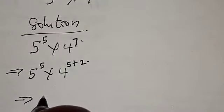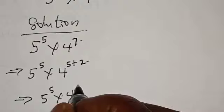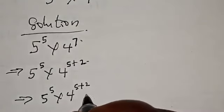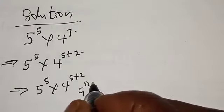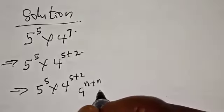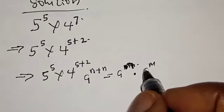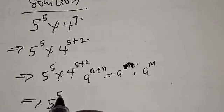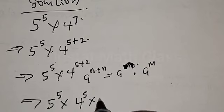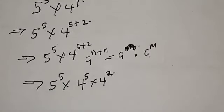This implies that we have 5 raised to power 5 multiplied by 4 raised to power 5 plus 2. Using the rule that a raised to power m plus n equals a raised to power m multiplied by a raised to power n, this gives us 5 raised to power 5 multiplied by 4 raised to power 5, multiplied by 4 raised to power 2.